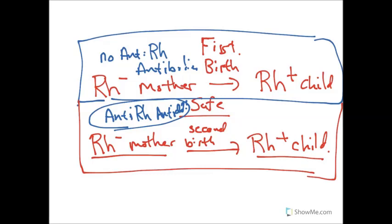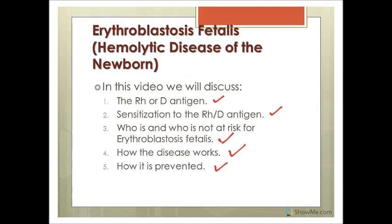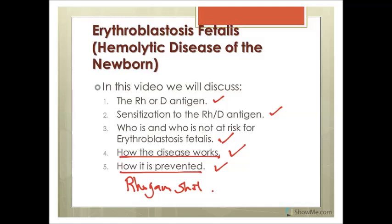To summarize: the fetus is at risk in the second Rh positive pregnancy of an Rh negative mother, while the mother herself is safe. We've seen how the disease works, who is at risk, and how it's prevented with the RhoGAM shot. It's also worth noting that ABO antibodies can occasionally be a minor contributing factor, though it's rarely a serious issue on its own, and there are various stages of disease intensity.